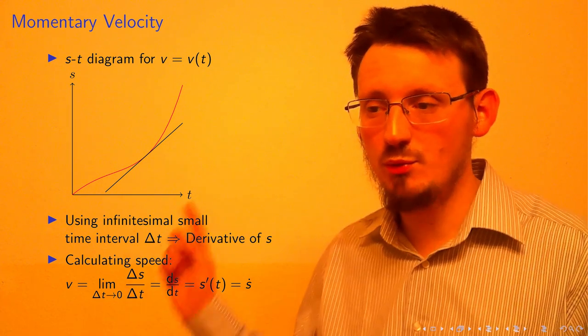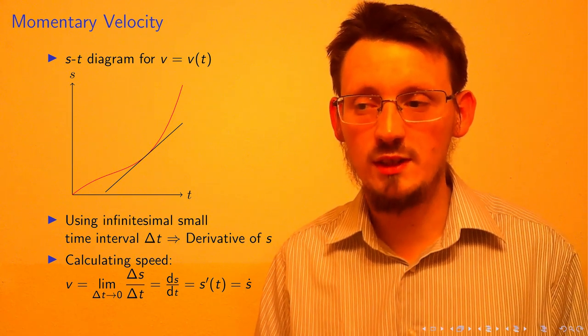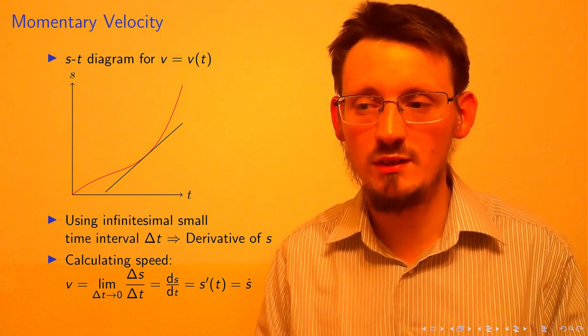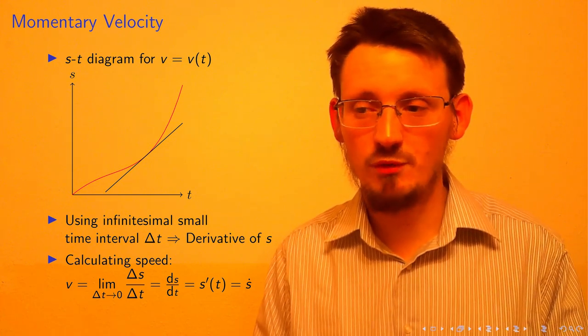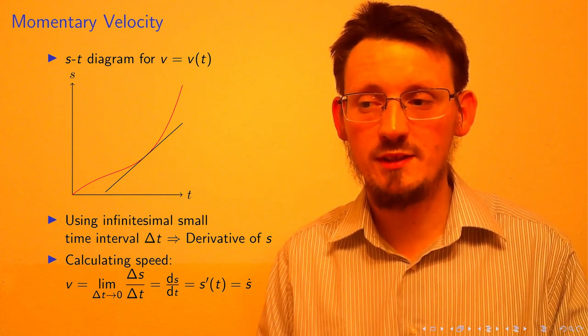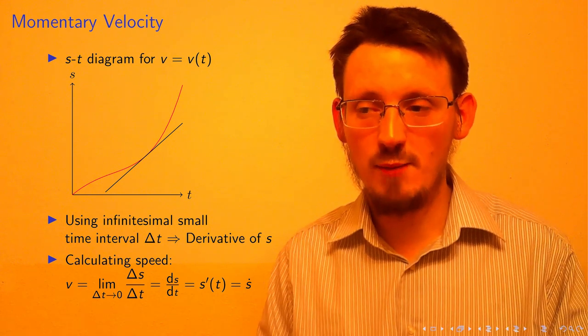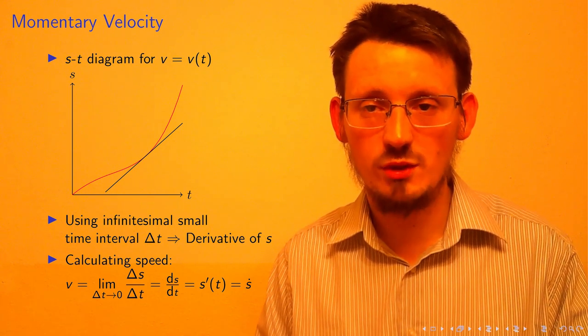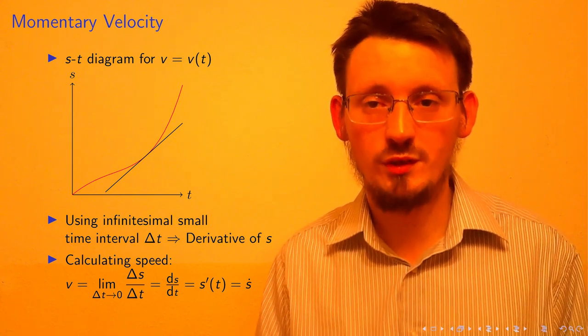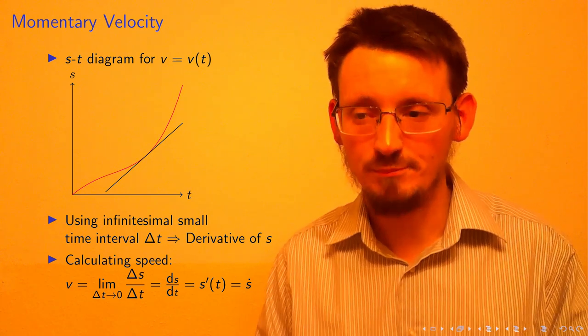And then, this can be written as the fraction ds over dt, so we just substitute delta S with ds and delta T with dt. Usually physicists prefer this way of writing the derivative. Other possibilities are to write it like S prime of T, this is normally done in schools in such a way, or simply S dot for the derivative, especially with respect to the variable T for the time.